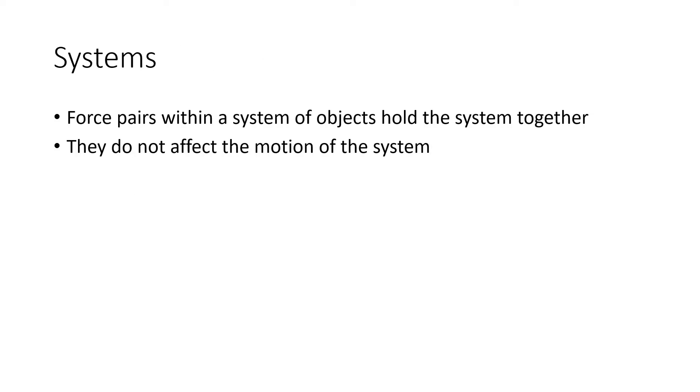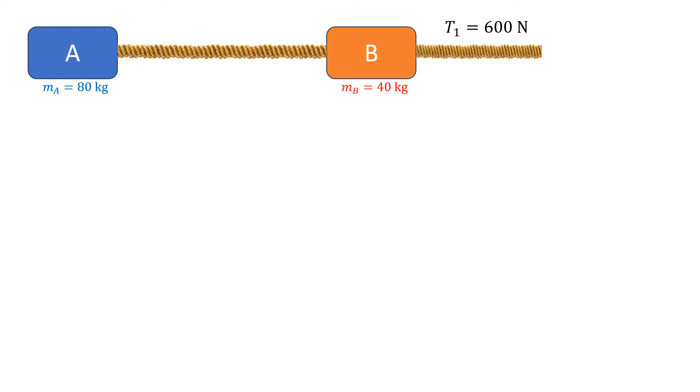So systems are created when you have multiple things that are held together by force pairs. Force pairs within a system just hold the system together. They do not affect the motion of the whole system. So we take our rope example, and we hitch another rope to thing B, and pull that second rope to the right with a force of 600 newtons. We can draw three free body diagrams for these things. Like there's rope one, there's rope two pulling B to the left, and there's rope two pulling A to the right. And you go, well, we have three forces that we have to consider in order to figure out what's happening in that thing.